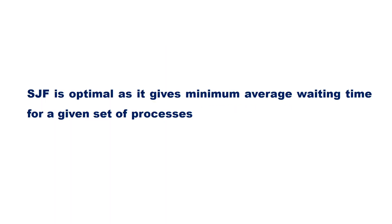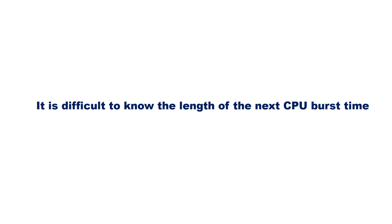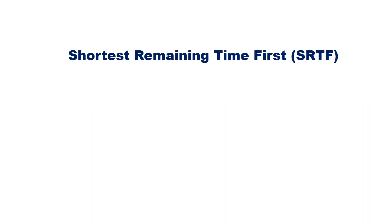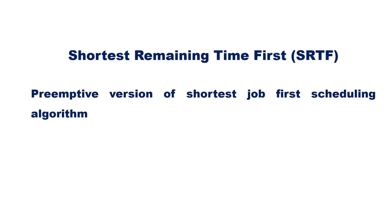SJF is probably optimal as it gives the minimum average waiting time for a given set of processes. However, SJF is optimal only when all jobs are available at the same time and the CPU burst times are known and accurate. The problem with SJF is that it is difficult to know the length of the next CPU burst time in advance. Shortest Remaining Time First (SRTF) is a preemptive version of SJF.